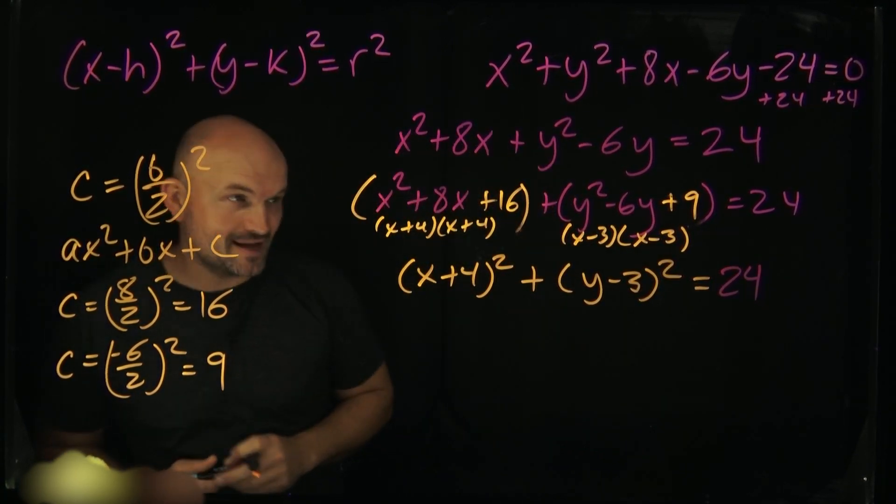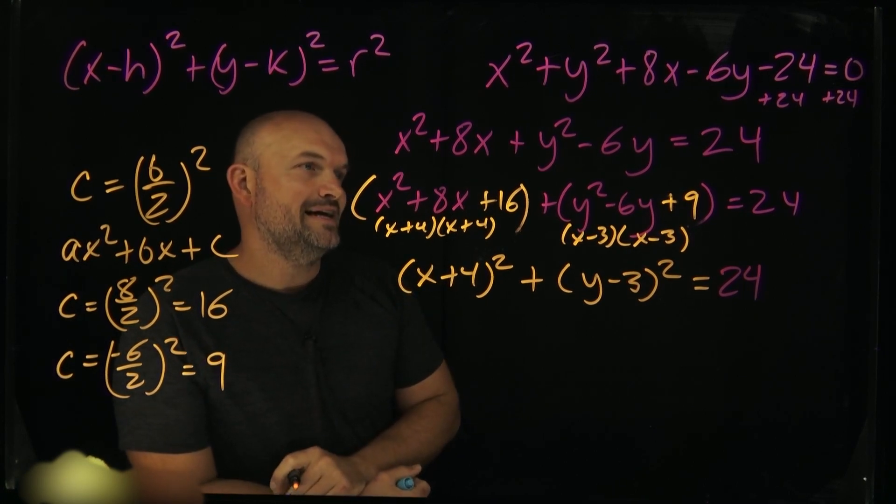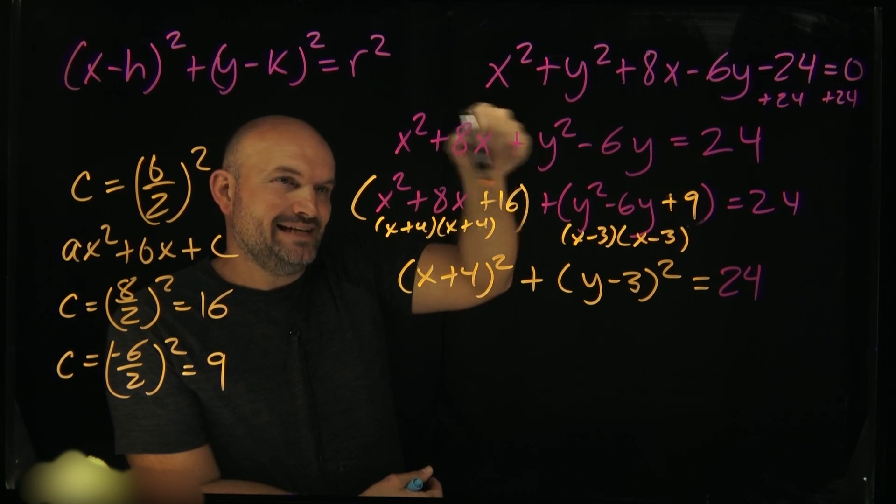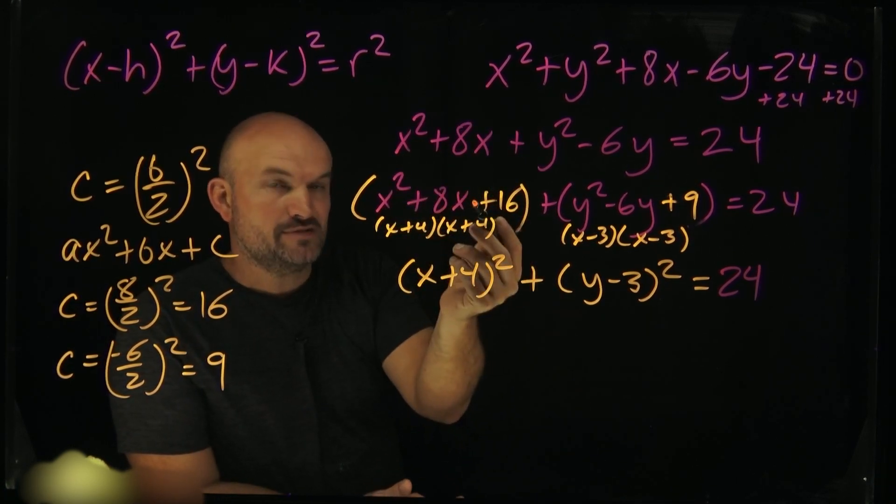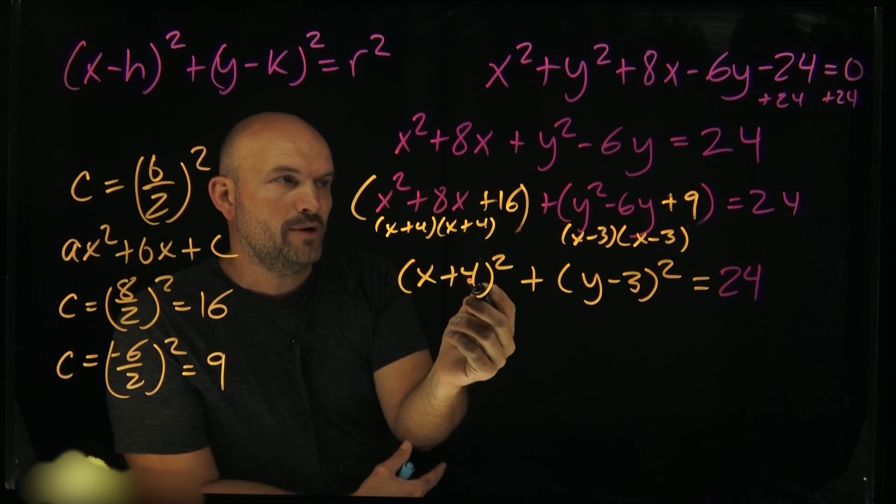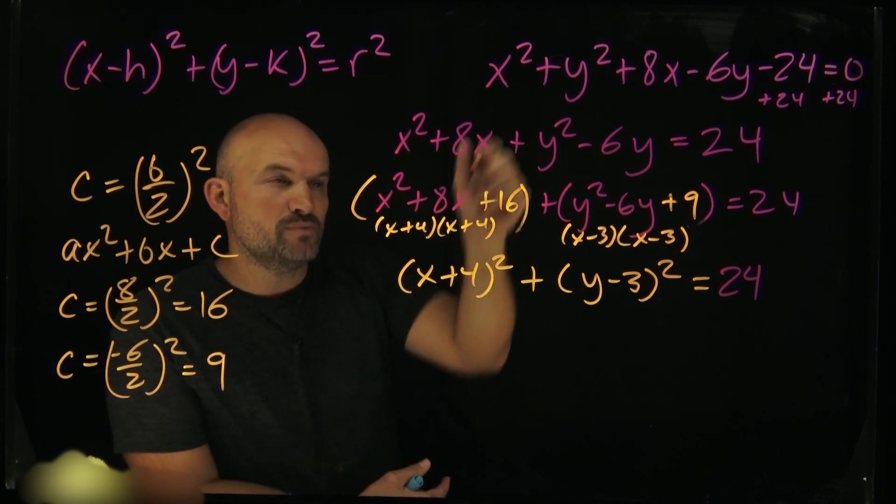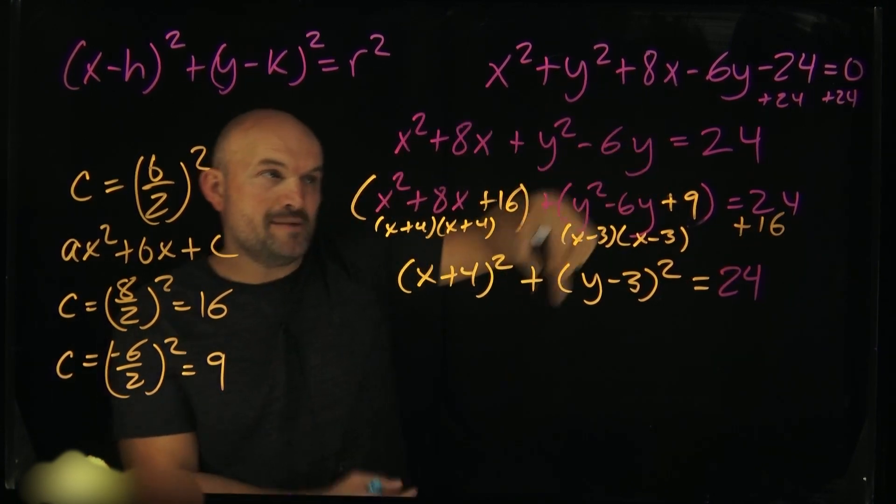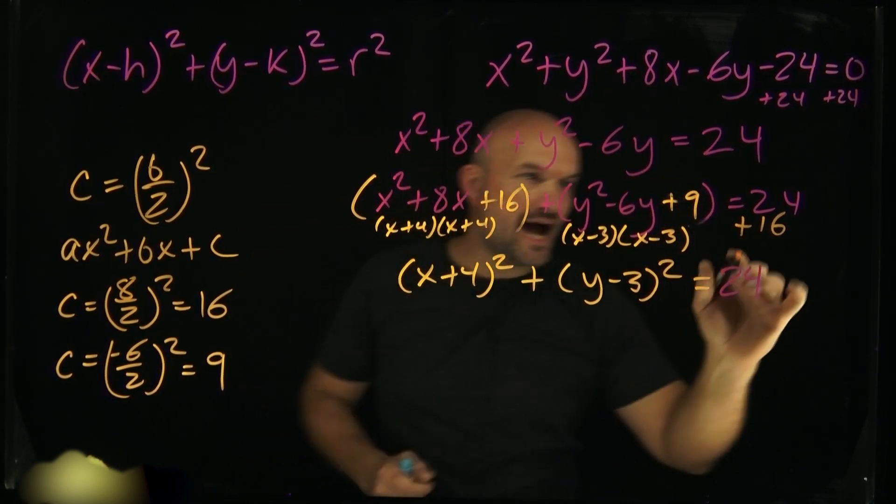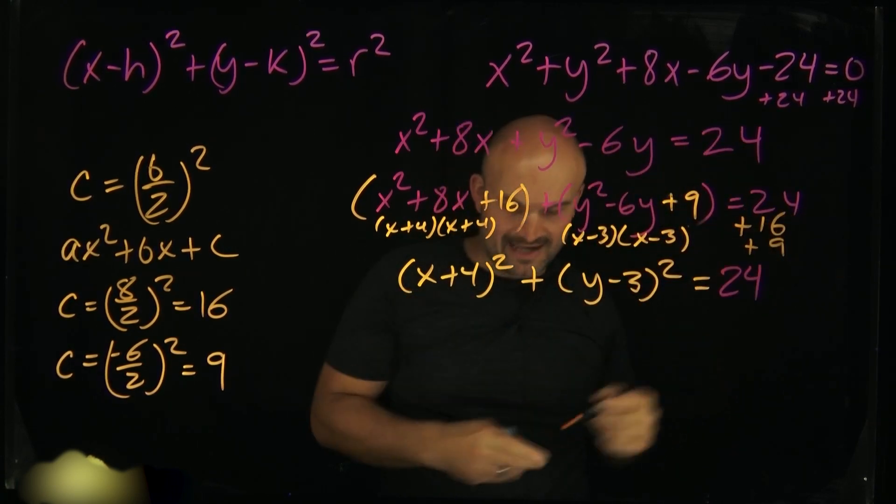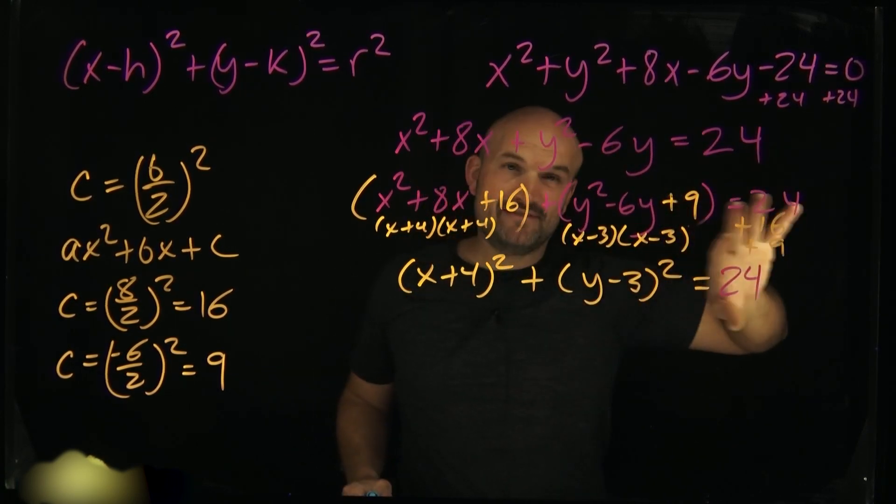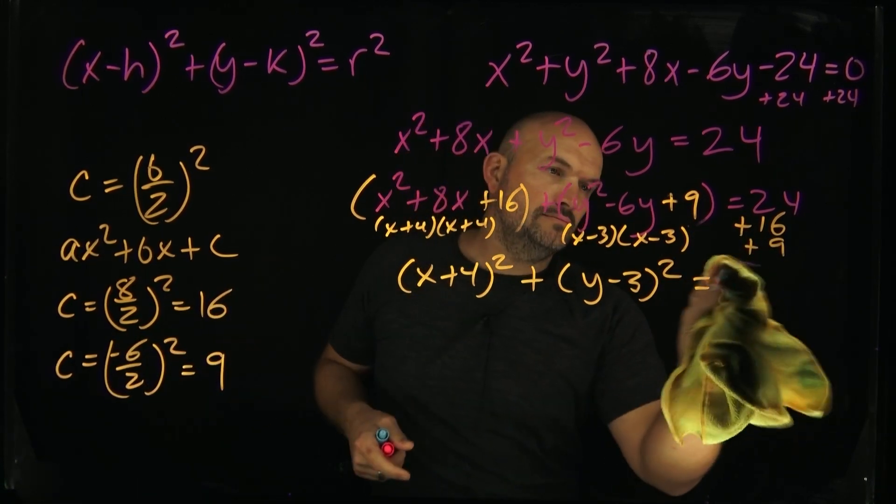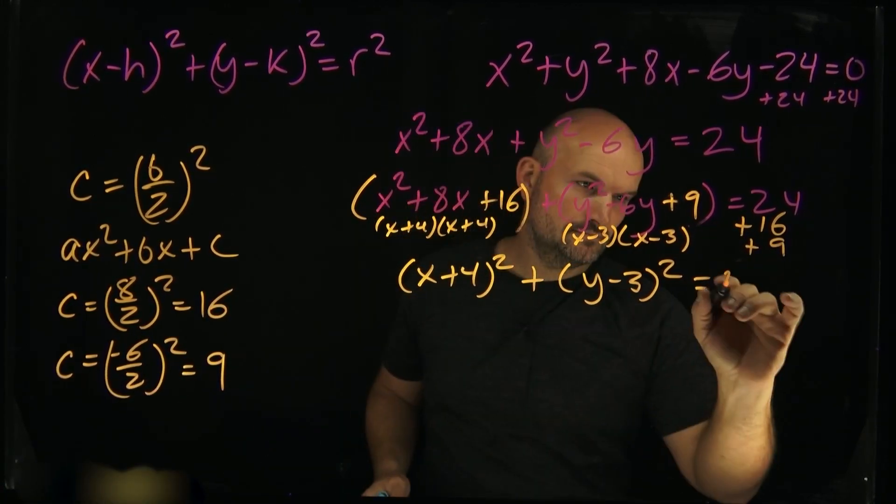One thing I forgot to do, and this is really important, is when you add - I kind of ran out of space and that's why I forgot about it. But remember, when you add a 16 here on this left-hand side, you can't randomly add a 16 into this expression. Yes, that made our perfect square trinomial here, but what we need to do is whenever we add that to the left-hand side, we have to add that to the right-hand side. The same thing over here. If I'm adding a 9 into this expression, I also have to add the 9 over here on the right-hand side. So I don't actually have a 24 in this case. What I'm actually going to have is we're going to have a 49.